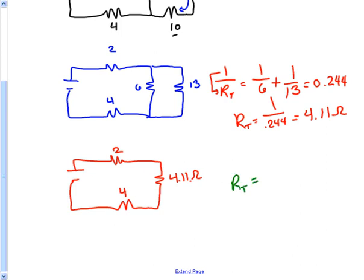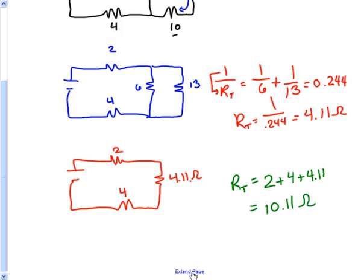Now this is no longer a complex circuit. This is just a regular good old-fashioned series circuit. We have to know that the total resistance here is just the addition of all of them: 2 plus 4 plus 4.11 gives us 10.11 ohms. So if we were to draw the last circuit, the last circuit would look something like this, and that is the total resistance.